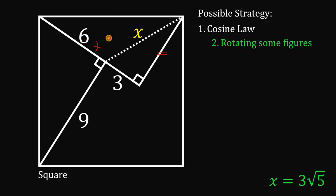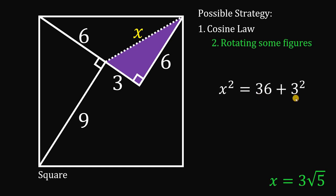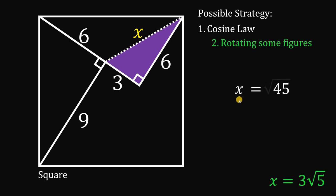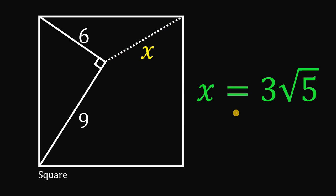This segment right here is just 6, because we rotated the figure. Using the new right triangle, we can now easily solve for x with the Pythagorean theorem: x squared equals 6 squared plus 3 squared. So 36 plus 9 equals 45. Taking the square root of both sides, x equals the square root of 45, which simplifies to 3 times the square root of 5. Therefore, the value of x is 3 times the square root of 5 units.